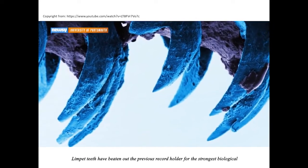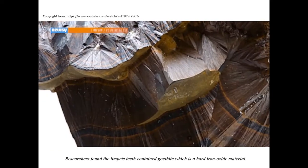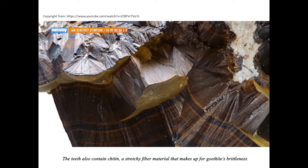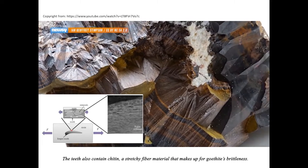Limpet teeth have beaten out a previous record holder for the strongest biological material found in nature. Researchers found the limpet's teeth contained goethite, which is a hard iron oxide material. The teeth also contain chitin, a stretchy fiber material that makes up for goethite's brittleness.